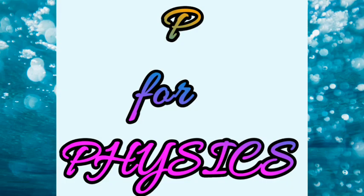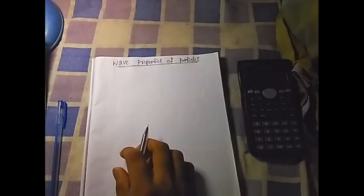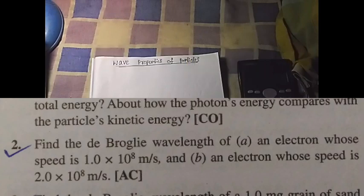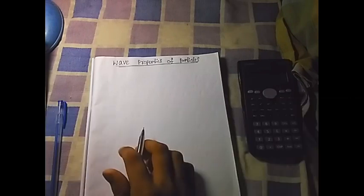Hello everyone, as you can see in this picture, the problem asks us to find the de Broglie wavelength of an electron whose speed is 1.0 times 10 to the power 8 meters per second. Option B says an electron whose speed is 2.0 times 10 to the power 8 meters per second.